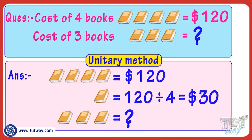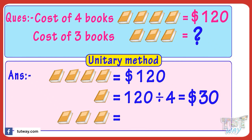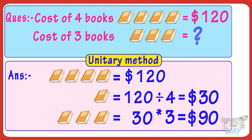Now we have calculated the cost of one book, so we can easily find out the cost of three such books. It will be $30 multiplied by 3, which equals $90. So the cost of three books is $90.